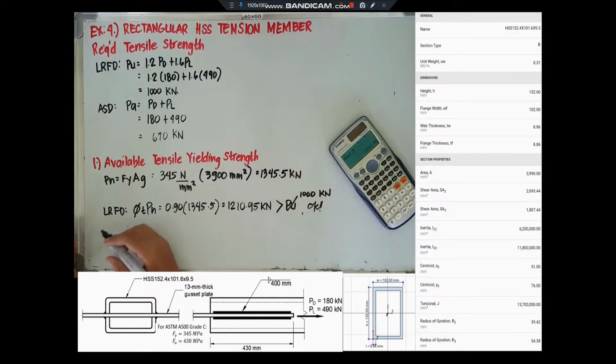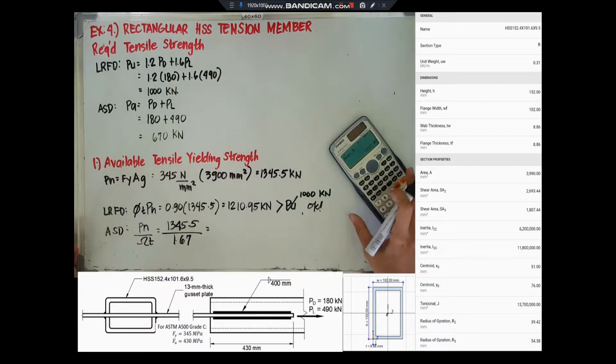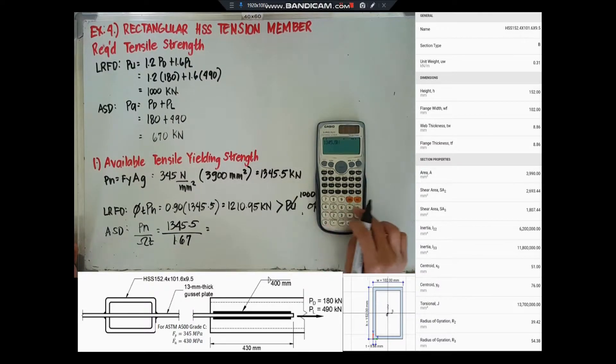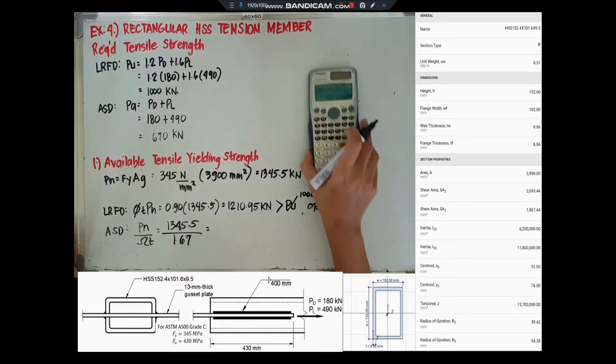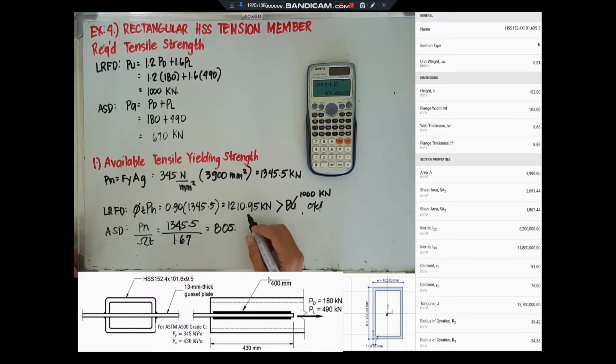For ASD, PN must be divided with the omega T which is 1.67. This gives 805.69 kN and it is greater than 670 kN, so okay.